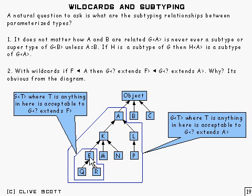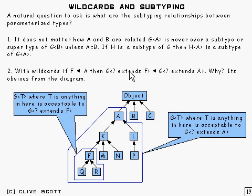And so since it's pretty clear that this smaller box sits inside of this larger one, then pretty clearly it is a subtype. Because anything which is in here will be acceptable to the larger box, and so indeed it is assignable, and therefore by definition it is a subtype. So that proves that G of something that extends F is a subtype of G of something that extends A, if F is a subtype of A.